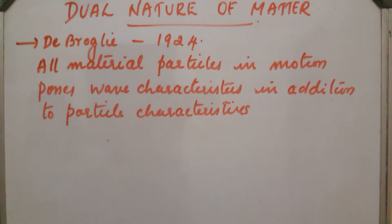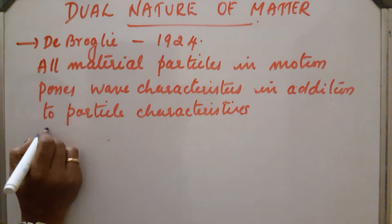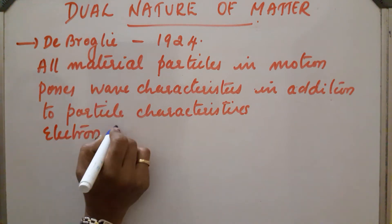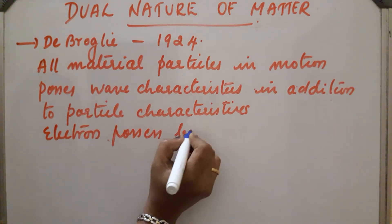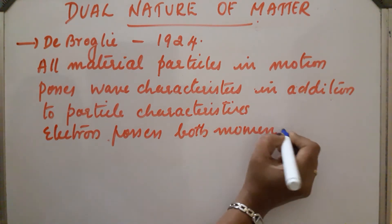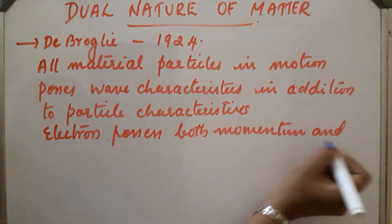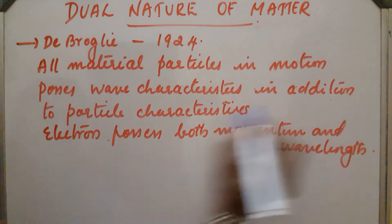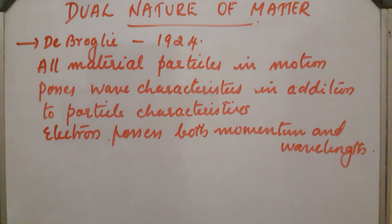We can say that an electron possesses both momentum and wavelength. This is applicable to all subatomic particles like electrons, protons, etc. And there is a relation between wavelength and momentum.